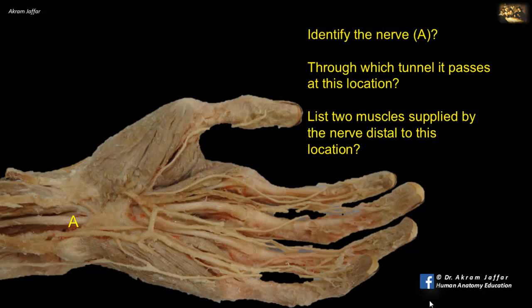Identify the nerve A, through which tunnel it passes at this location. List two muscles supplied by the nerve distal to this location.